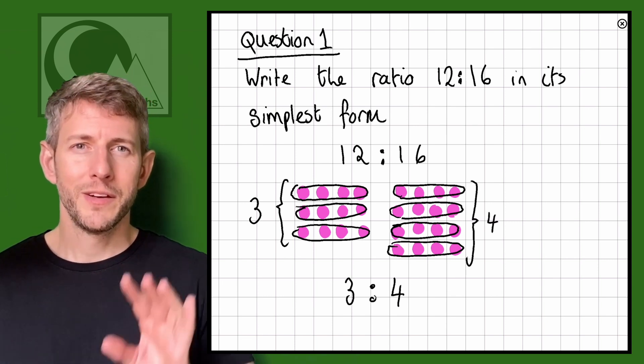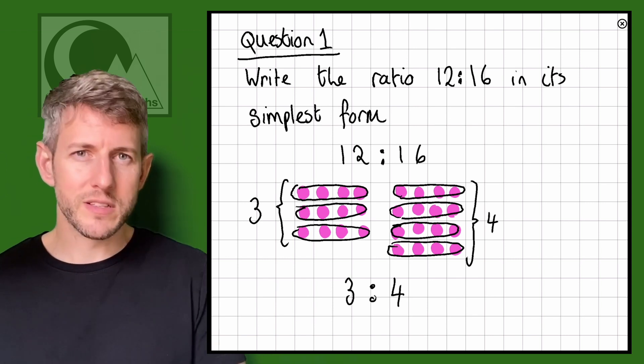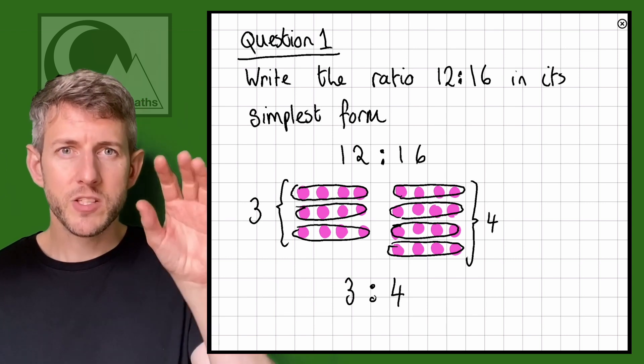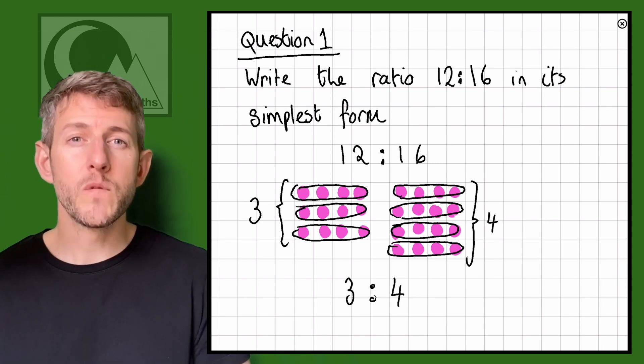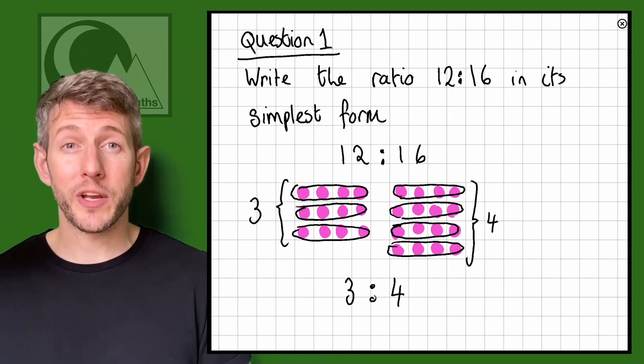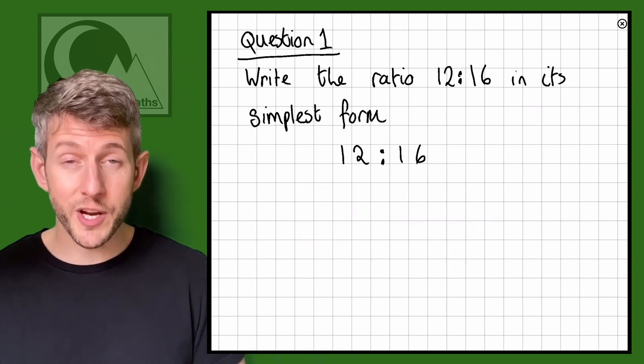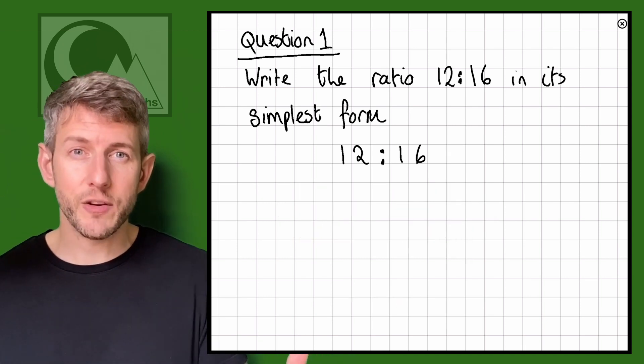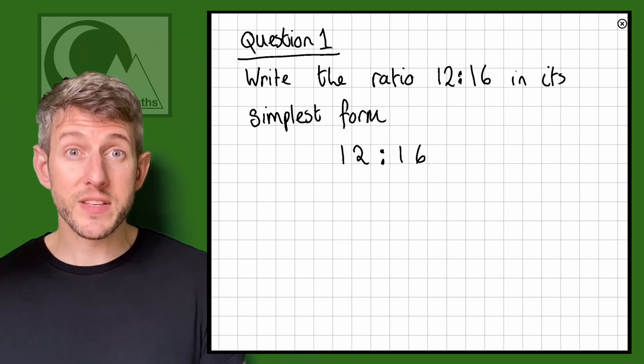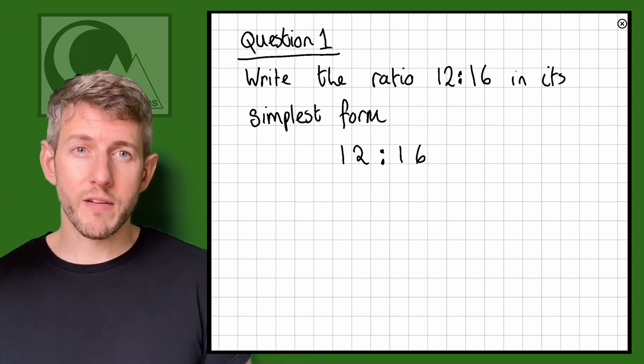Remember this is what it looks like, this is why 12 to 16 is also three to four. But we can also do this by looking at it with direct proportion as well. We know that ratios are proportional, they increase and decrease by being multiplied and divided by the same amounts. That's what directly proportional is.